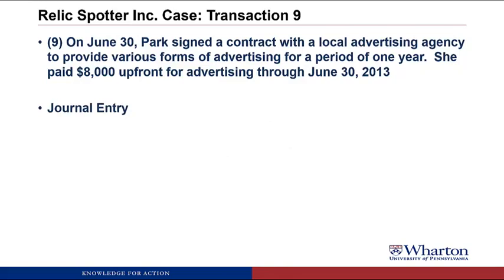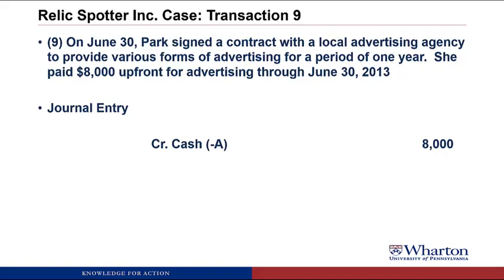For this journal entry, we are paying $8,000 of cash. Cash is an asset and we make an asset go down with a credit, so we credit cash for $8,000. Every time we pay cash it's a credit to the cash account. For the debit — we're getting a year's worth of advertising without having to pay any additional cash. That's an asset, so we're going to create an asset called prepaid advertising and debit it for $8,000.